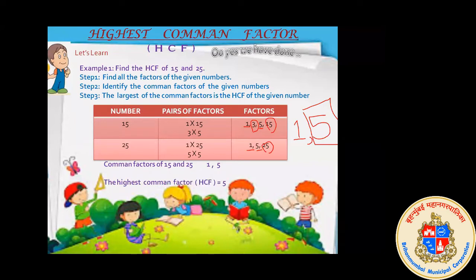Now the last step: find the largest common factor. From the common factors 1 and 5, which is the biggest? It is 5. So 5 is the Highest Common Factor. Multiple common factors can be found, but the greatest number from all common factors is the HCF. Therefore, the HCF of 15 and 25 is 5.